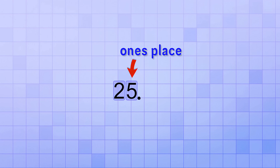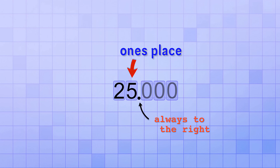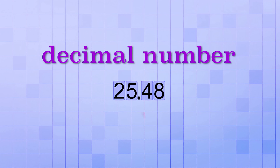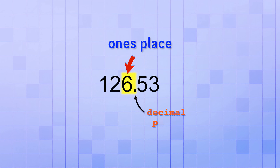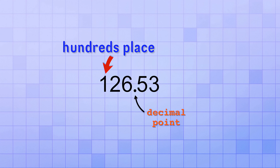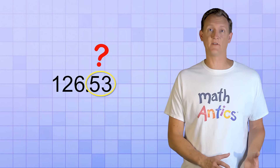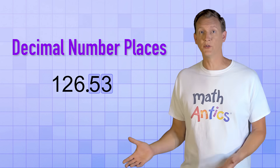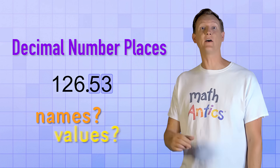Of course, you could still show the decimal point if you wanted to, since it's always immediately to the right of the ones place, but if there's no decimal digits, then we don't need to separate them from the whole number digits. If a number does have decimal digits, then we call it a decimal number, and the decimal point helps us quickly recognize which digit is in the ones place. For example, if you see a sequence of digits like this, you can tell right away that the digit 6 is in the ones place, because it's immediately to the left of the decimal point. That means this 2 is in the tens place, and this 1 is in the hundreds place. But what about the digits that are to the right of the decimal point? We know that they must be in decimal number places, but what are the names of those decimal number places, and what values do they count?